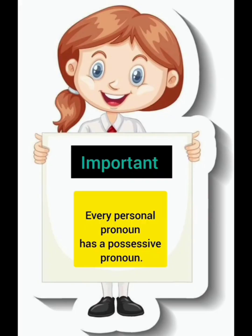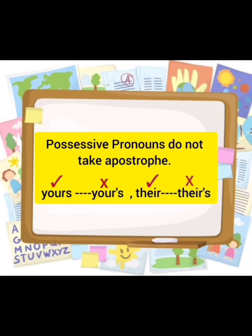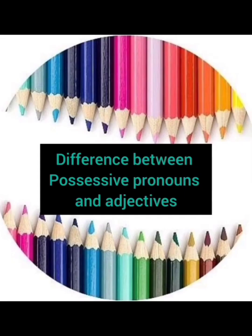There are two important points related to possessive pronouns. First, every personal pronoun has a possessive pronoun. Second, possessive pronouns do not take apostrophes. For example: 'it is yours' — without apostrophe, is correct. With an apostrophe, it is wrong. 'Theirs' is correct, but 'their's' with an apostrophe is wrong.